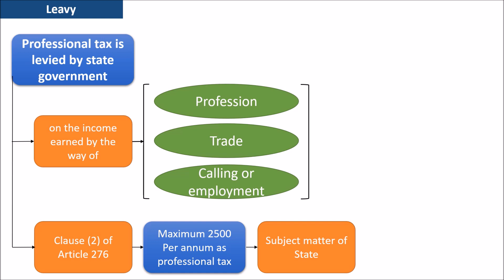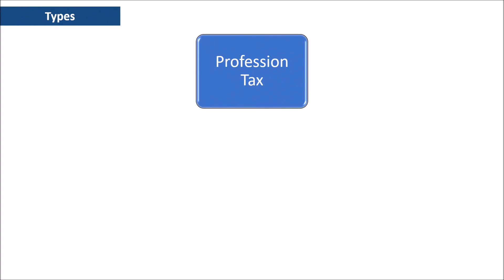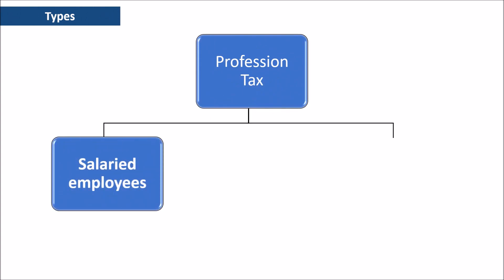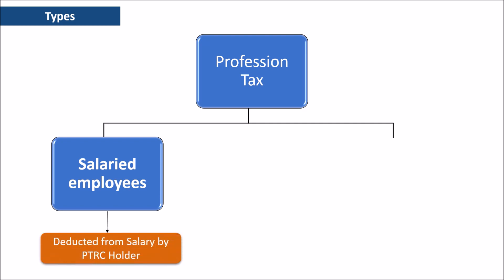Professional tax can be of two types on the basis of payment. In the case of salary and wage earners, the profession tax is to be deducted by the employer from salary and wages as per the slab, and the employer is liable to pay it to the state government. The employer needs to obtain PTRC, that is, Profession Tax Registration Certificate. If you are an employee, you can check your professional tax on your salary slips.